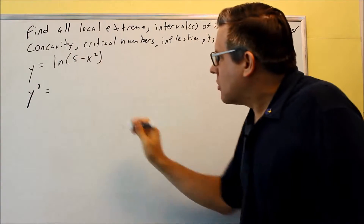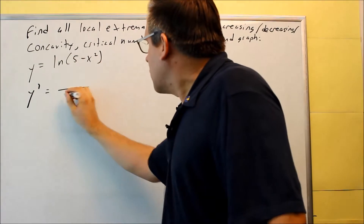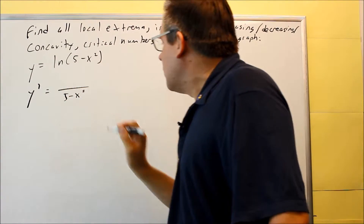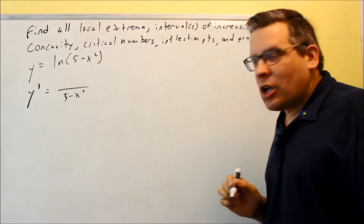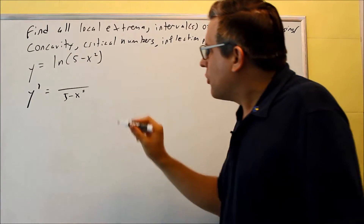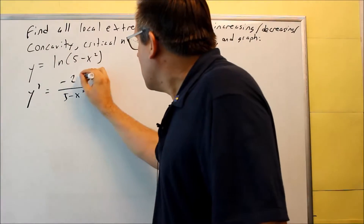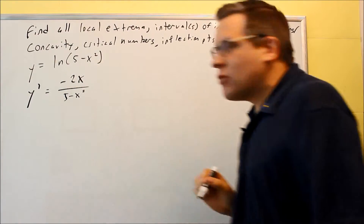The u is 5 minus x squared, so that's going to go on the bottom. On top, we're going to have the derivative of 5 minus x squared, which is going to be negative 2x.